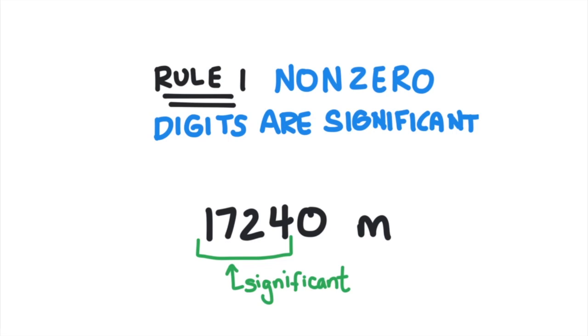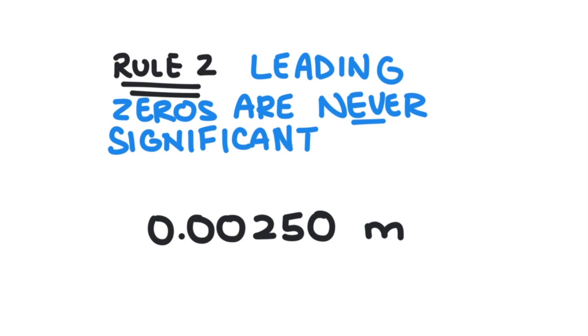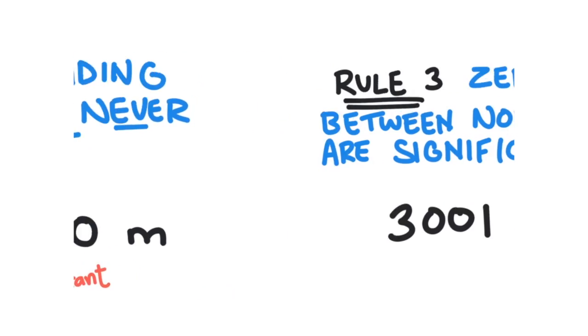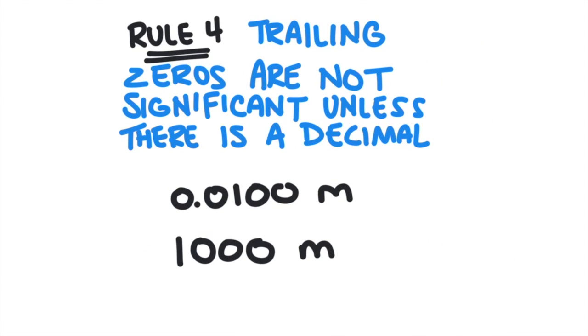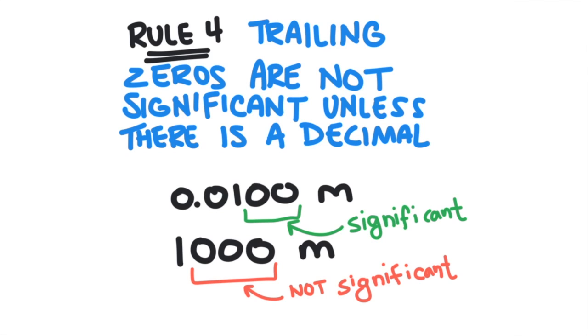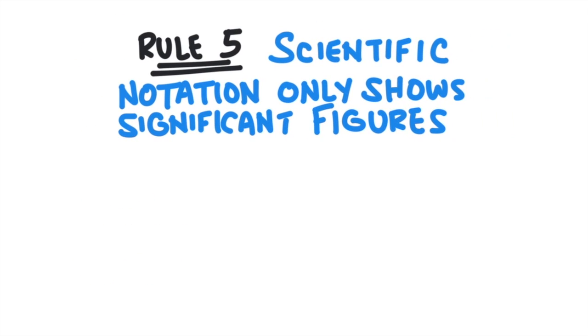The second rule states that leading zeros are never significant. That is, zeros that come before a non-zero digit. These zeros are generally just holding the place of a decimal, and they don't contribute to the number. The third rule is that zeros between non-zero digits are significant. The fourth rule is that trailing zeros are not significant unless there is a decimal place somewhere in the number. And then finally, scientific notation only shows significant figures.